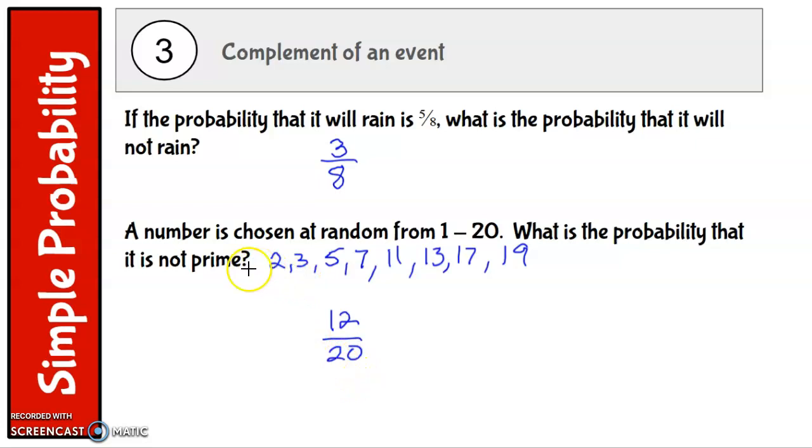And we can check that real quick. 1, 2, 3, 4, 5, 6, 7, 8, 9, 10, 11, 12 out of 20 that are not prime. And we can divide both of those by 2 to simplify it to be 6 tenths. And then we can divide it again by 2 to simplify it again to 3 fifths. So that is the probability that it is not prime.